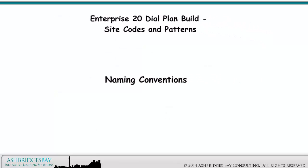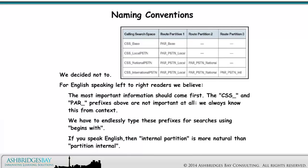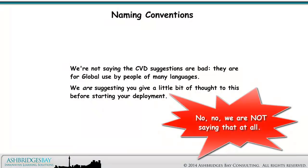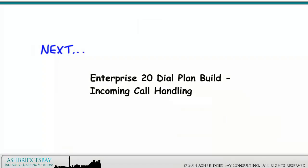A final note on naming conventions. We would like to have aligned with the SRND and CVD naming conventions — for example, calling search spaces and partitions from the CVD. We decided not to. For English-speaking left-to-right readers, we believe the most important information should come first. The CSS and PAR prefixes are not important at all — we always know this from context. We have to endlessly type these prefixes for searching using begins-with, and if you speak English, then Internal Partition is more natural than Partition Internal. We're not saying the CVD suggestions are bad — they are for global use by people of many languages. We are suggesting you give a little bit of thought to this before starting your own deployment. Coming up next: Enterprise 20 Dial Plan Build, Incoming Call Handling. Thanks for watching.